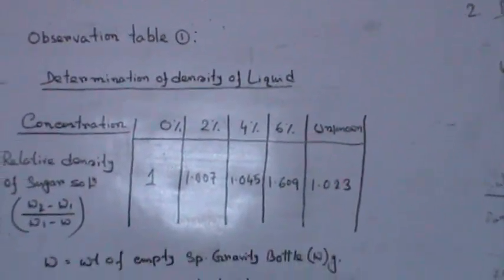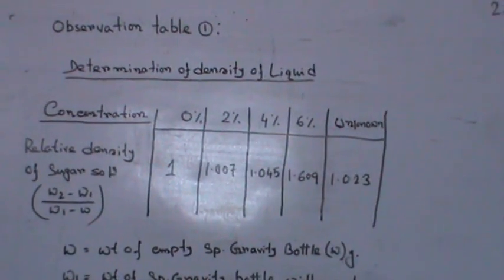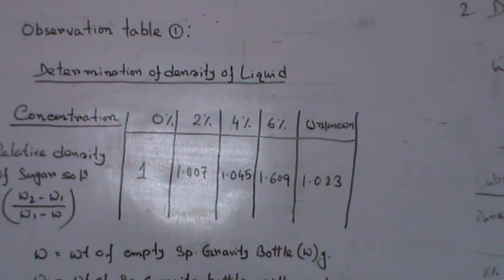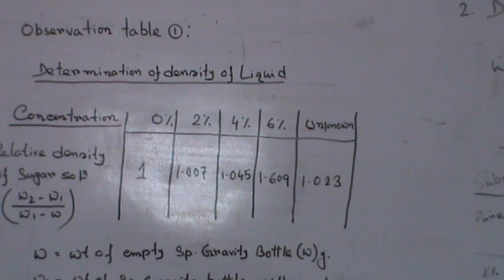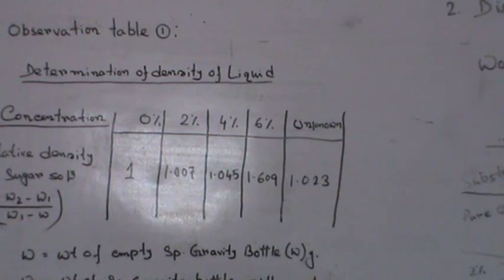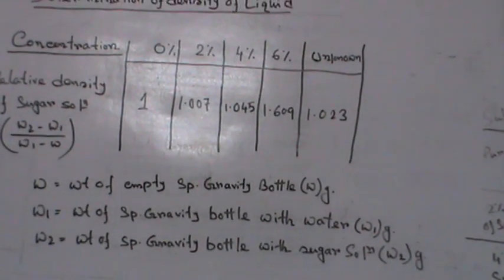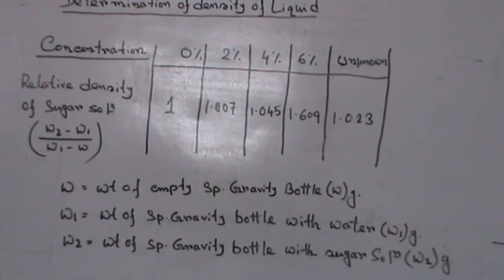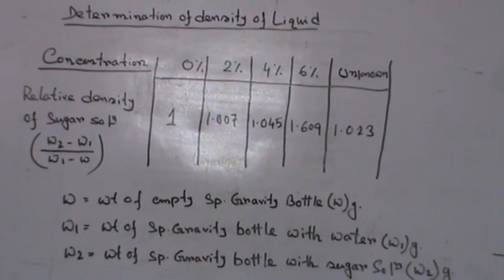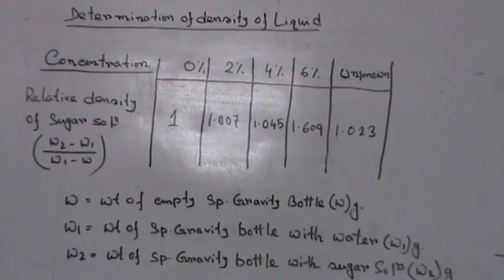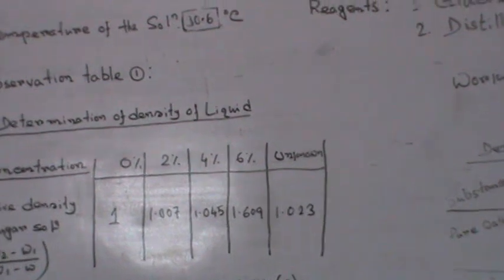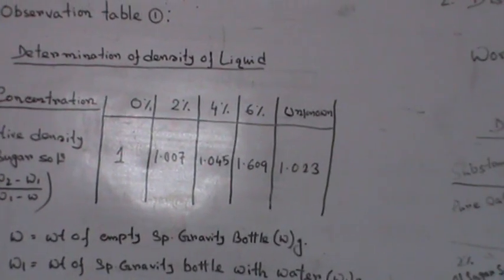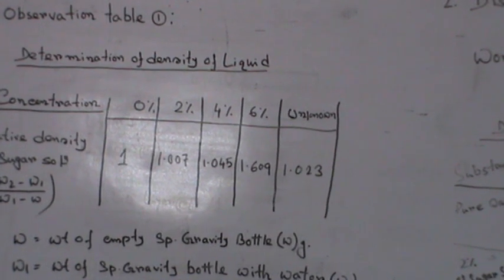First we need to determine the density of the liquid. We have already prepared the two percent, four percent, and six percent solutions. The working formula is: w2 minus w1 equals w1 minus w, where w is the weight of the empty specific gravity bottle, w1 is the weight of the bottle with water, and w2 is the weight of the bottle with sugar solution.